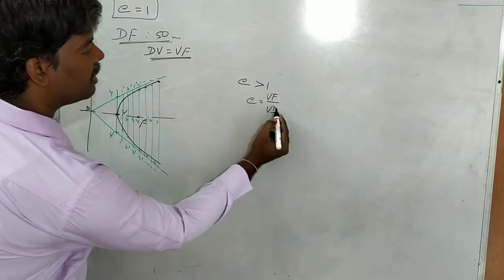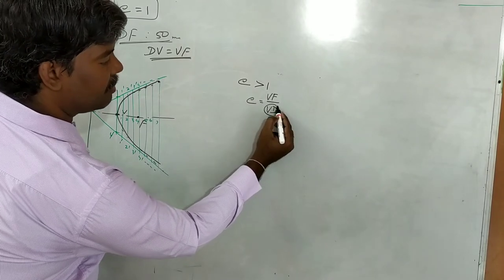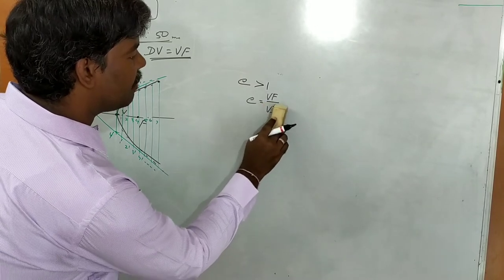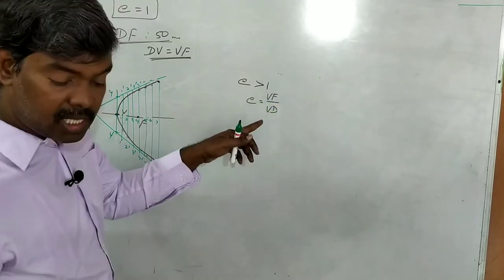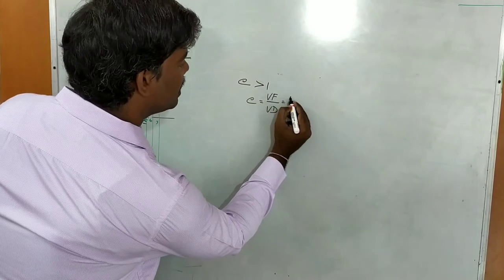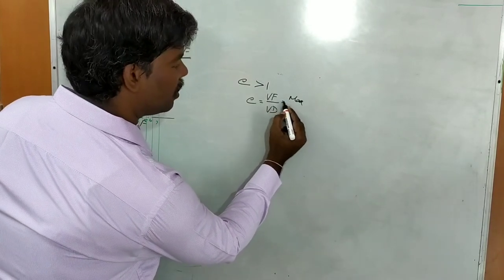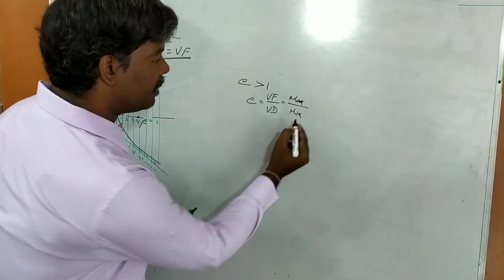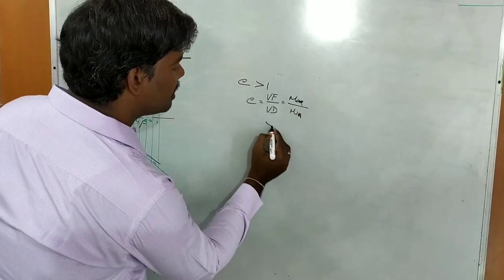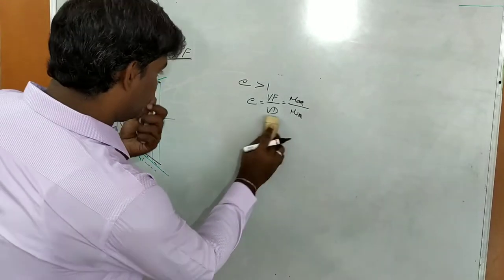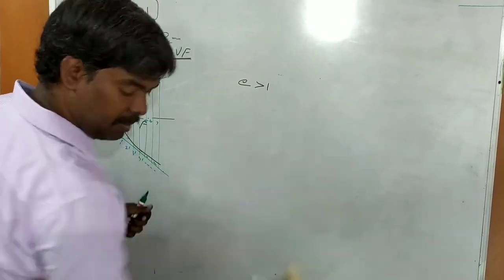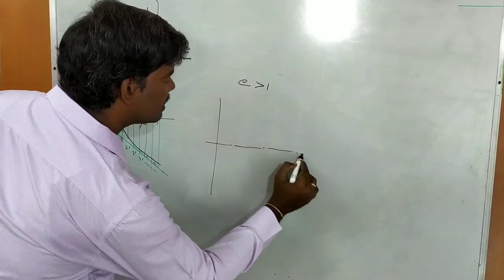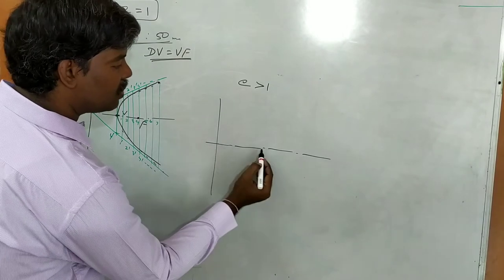For hyperbola, the same procedure applies with one difference: the V-D (vertex to directrix) distance relationship changes. In ellipse, the V-D distance is maximum; in hyperbola, V-D distance is minimum. Therefore, focus-to-vertex divided by directrix-to-vertex is always greater than 1, giving eccentricity greater than 1. For hyperbola, the same procedure: draw directrix and axis, and note the directrix-to-focus distance.